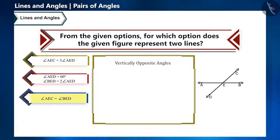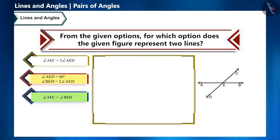It is the third option which straight away states that opposite angles AEC and BED are vertically opposite angles. If you look at the second option, angle BED is two times angle AED, which is 120 degrees, and the sum of these two angles will be 180 degrees.